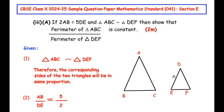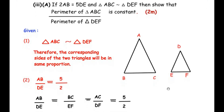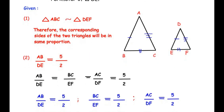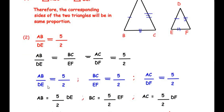Since the two triangles are similar, we write their sides in the same proportion: AB over DE equals BC over EF equals AC over DF equals 5 over 2. Separating each proportion: AB over DE equals 5 over 2, BC over EF equals 5 over 2, and AC over DF equals 5 over 2. Therefore, AB equals 5/2 times DE, BC equals 5/2 times EF, and AC equals 5/2 times DF.